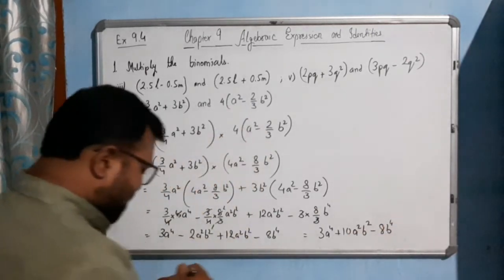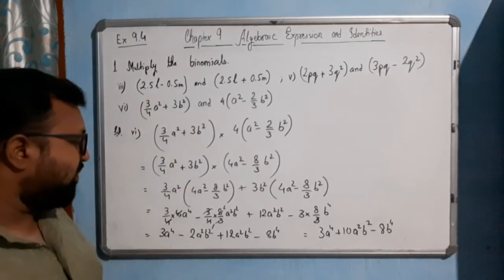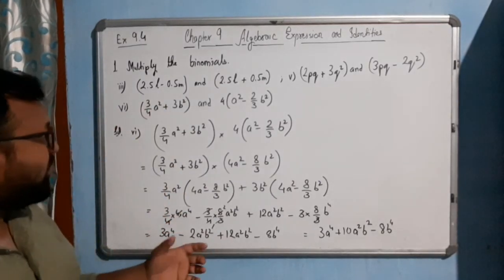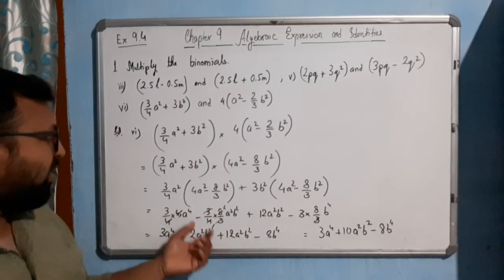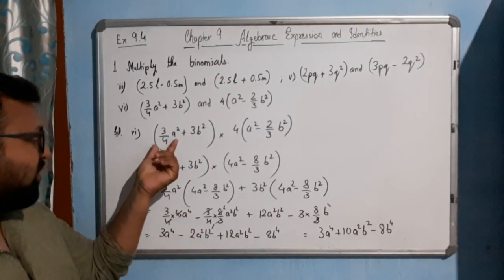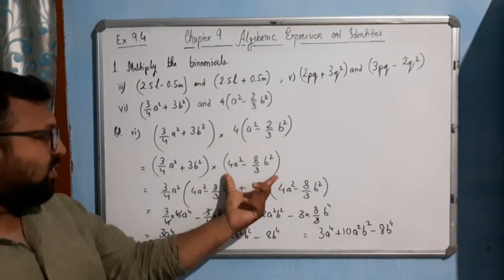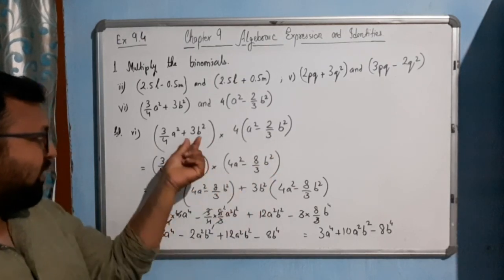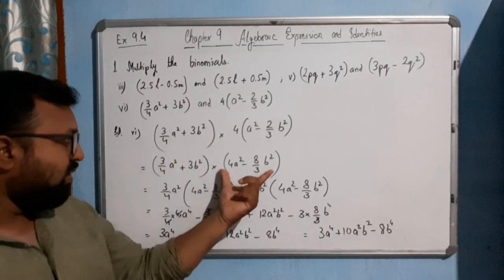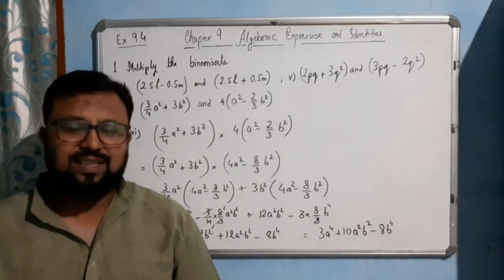I hope you have understood all three examples very clearly. I think it is very easy to multiply binomials: multiply the first term of the first expression with all terms of the second expression, and then the second term of the first expression with the second expression. I hope you have understood. Thank you.